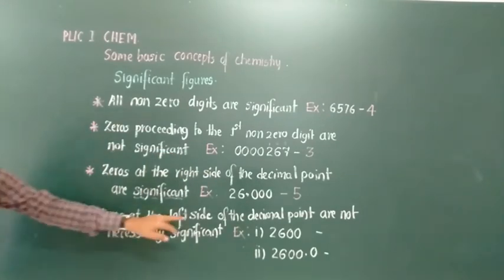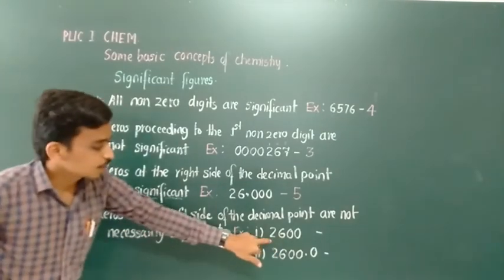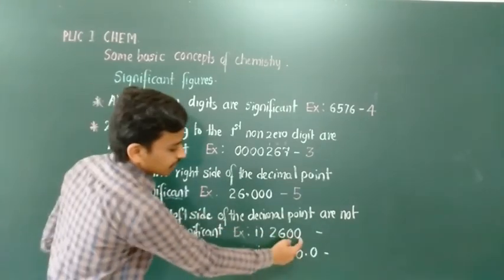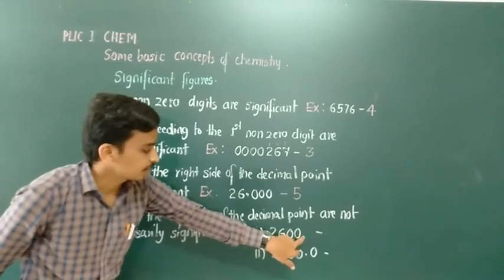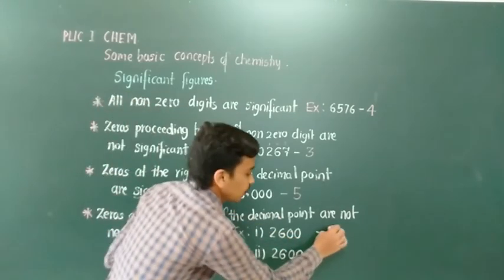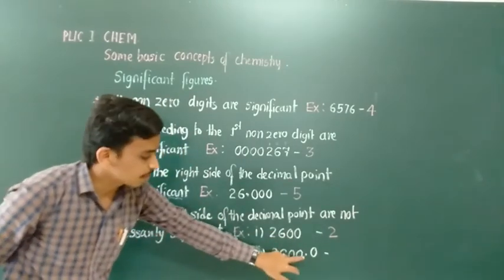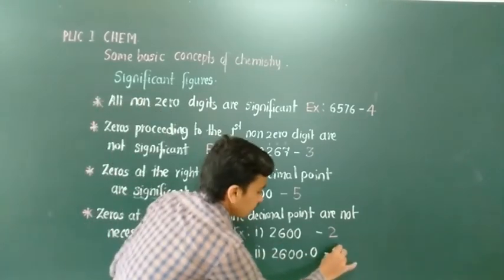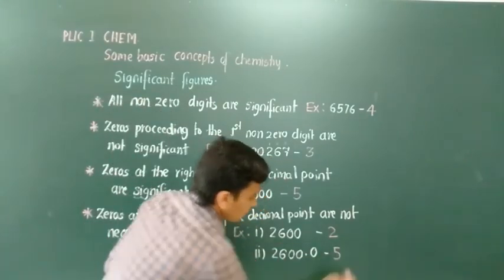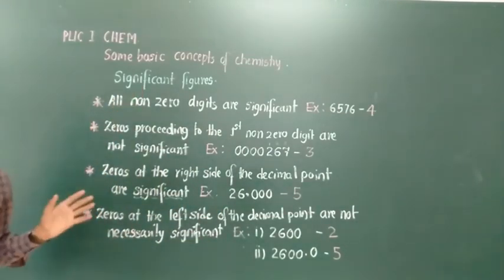Zeros at the left side of the decimal point are not necessarily significant. For example, 2600 has a significant value of only 2. However, for a number like 6000.0, the zeros to the right of the decimal point are significant, making the total number of significant digits 5. This is an important rule for identifying significant figures.